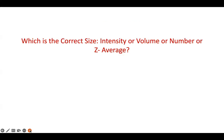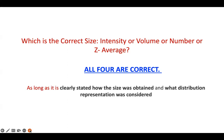So the question returns: which is the correct size — intensity, volume, number, or Z-average? All four are correct, as long as it is clearly stated how the size was obtained and what distribution representation was considered.